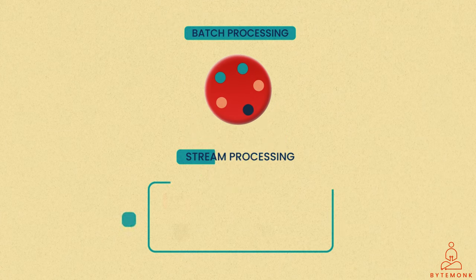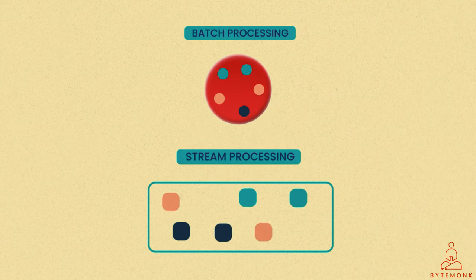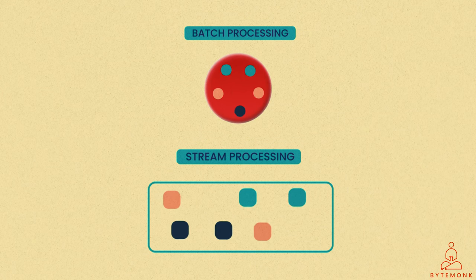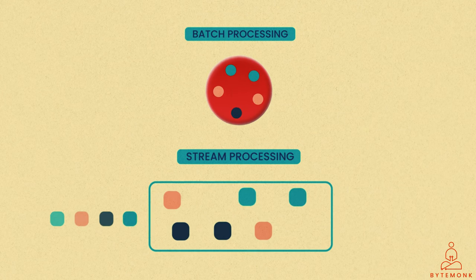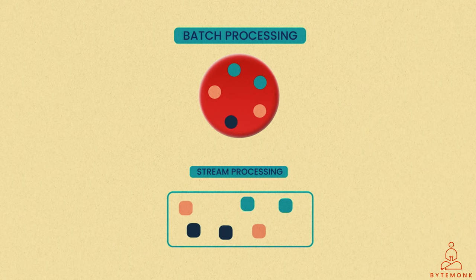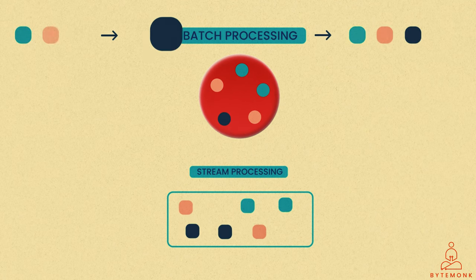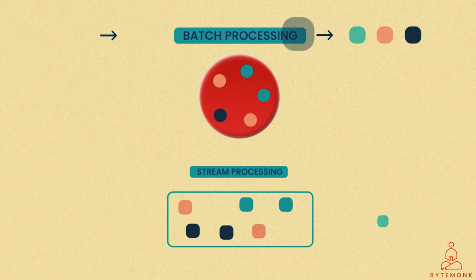Now, we have already discussed stream processing in my previous video, which is the process of analyzing and processing data in real time as it is being generated. Batch processing, on the other hand, is the process of analyzing and processing data in large chunks or batches after it has been collected and stored.